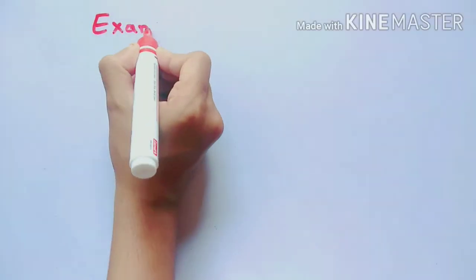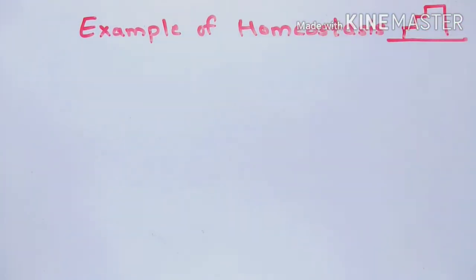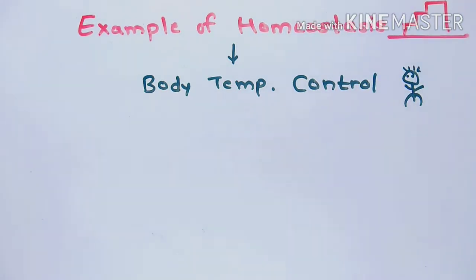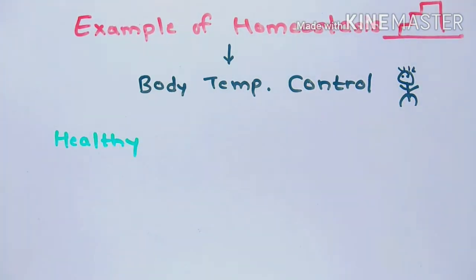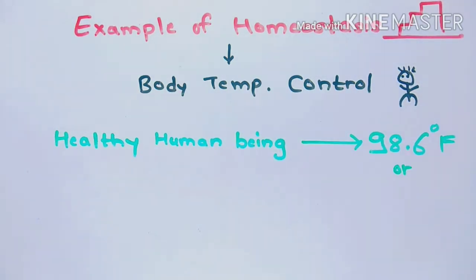Firstly, I would like to give you some examples of homeostasis so it can help you build your concept faster. Body temperature control in humans is one of the most familiar examples of homeostasis. A healthy human being maintains a temperature close to 98.6 degree Fahrenheit, that is 37 degree Celsius.